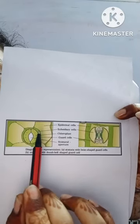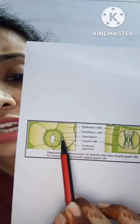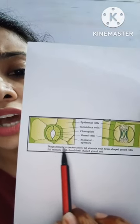Now outside of it, some cells of epidermis which are specialized in their shape and size are known as the subsidiary cell. This green one is subsidiary cell and outermost is the epidermis cell.